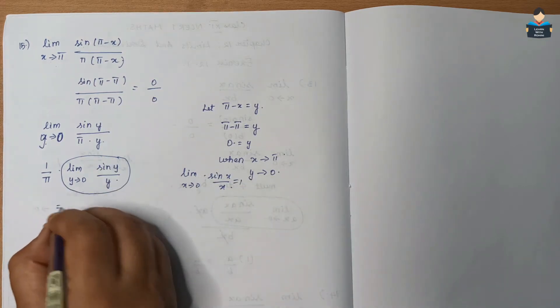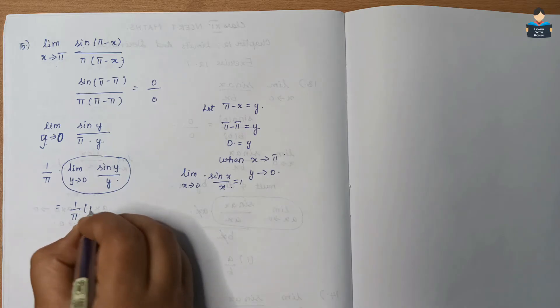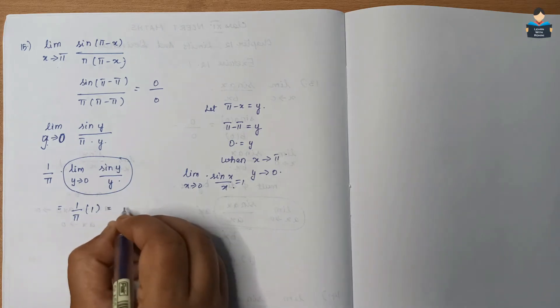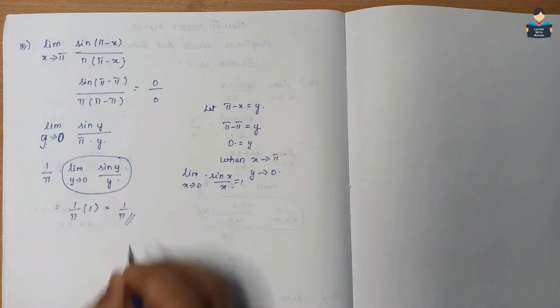So the answer is 1/π × 1, which is 1/π. That is the answer for Question 15.